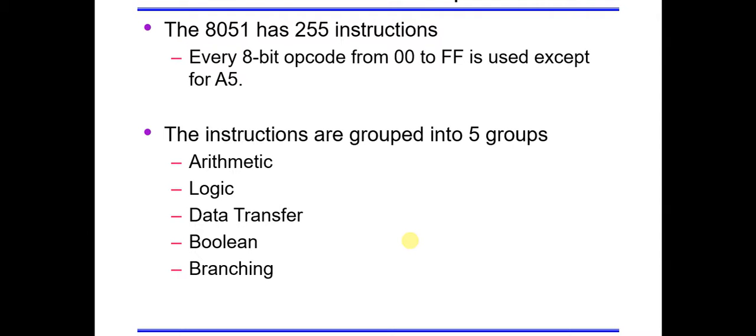And boolean and branching. Branching means jump or call, this type of function or instruction to jump from one instruction to another. So these are the instruction groups that we have in 8051.